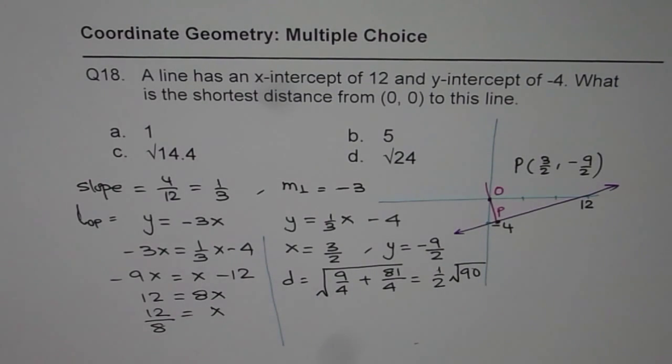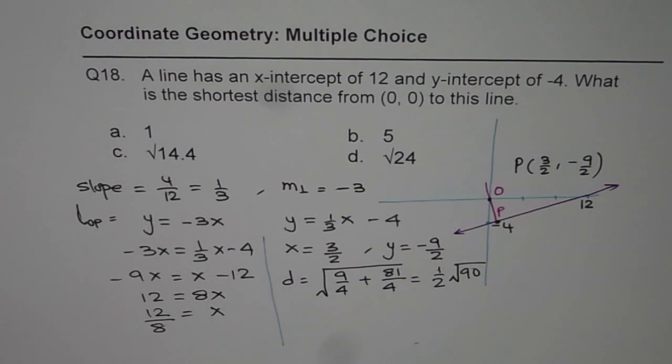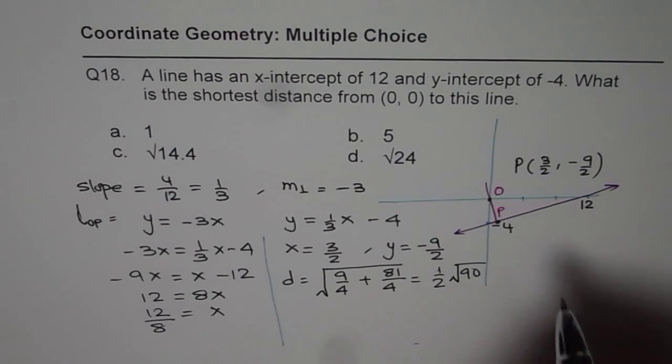So 90 square root divided by 2. Let's find out the square root of 90. Square root of 90 is equal to 3 square root of 10. And divided by 2 will give us 3 square root of 10 divided by 2, which is 4.74.